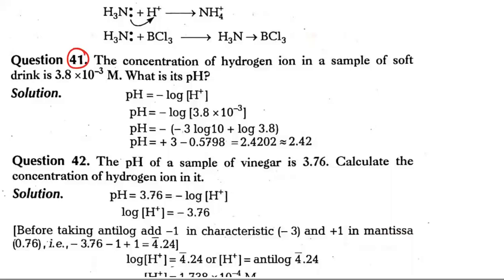Hello, today we will discuss equilibrium chapter question number 41 where we are asked the concentration of hydrogen ion or H+ ion in a sample of soft drink, which is 3.8 × 10^-3 molar concentration or moles per liter.